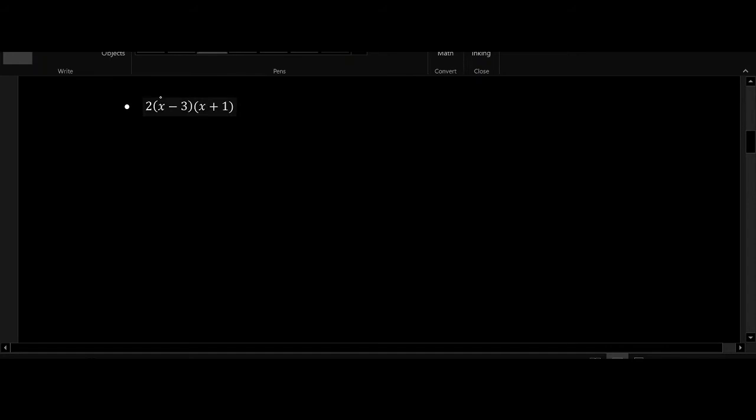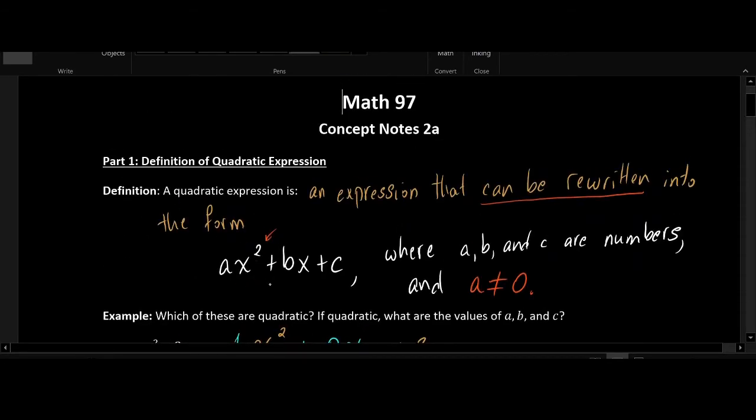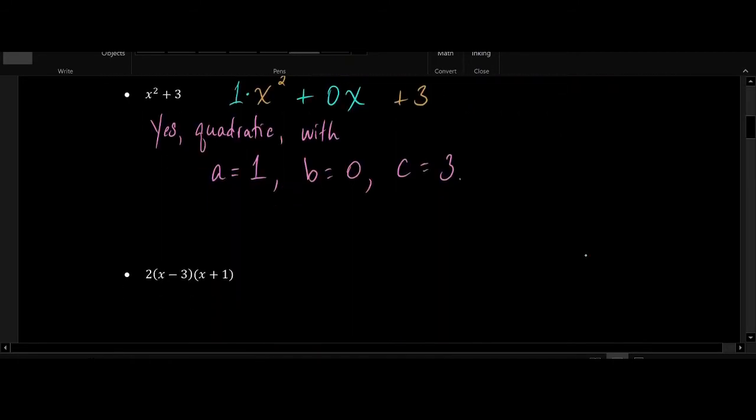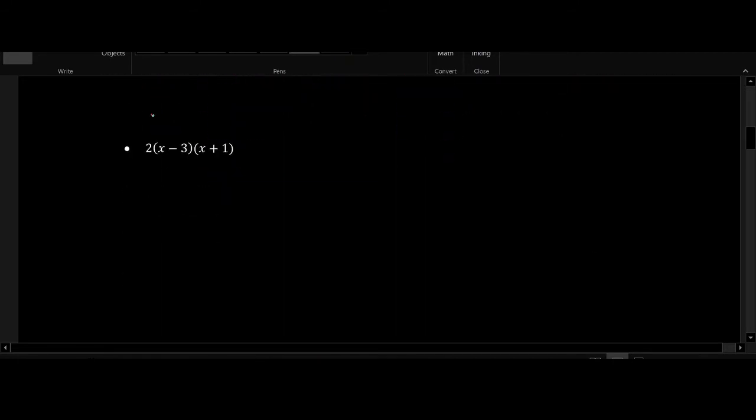What about this one? Is this expression quadratic, and if so, what are the values of a, b, and c? Well to begin with, I'm going to start by trying to distribute this expression because this expression is all factored out, but the expression in the definition has been completely simplified and multiplied together. So I'll start by distributing 2 into the first product and I have 2x - 6 times x + 1.